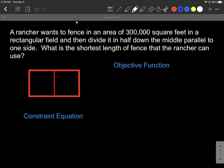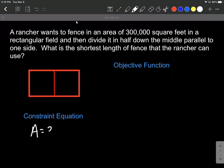We want to have 300,000 square feet for the area. And we are trying to find the shortest length of fence that this rancher can use. So I'm going to use p for perimeter, meaning that if I add up all the sides, those lengths of the fence, I want it to be the smallest possible perimeter.